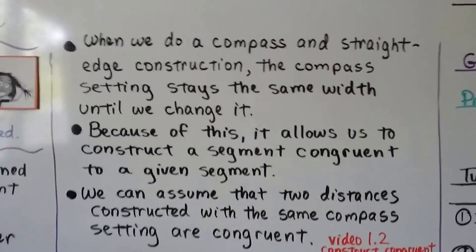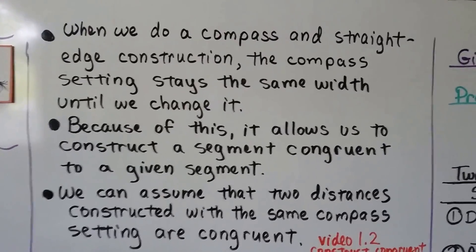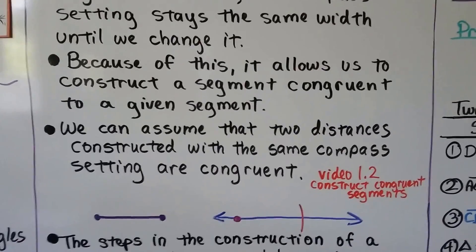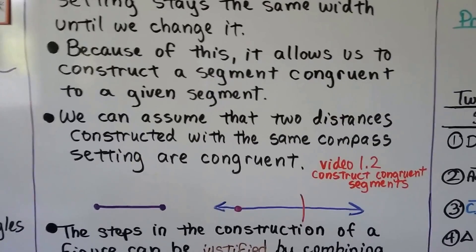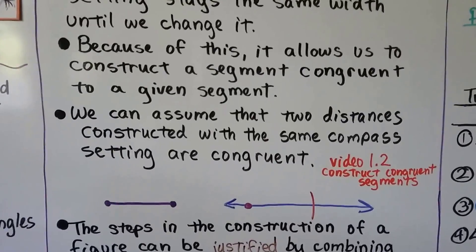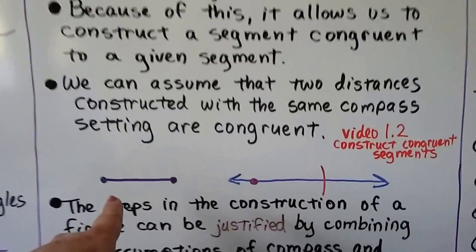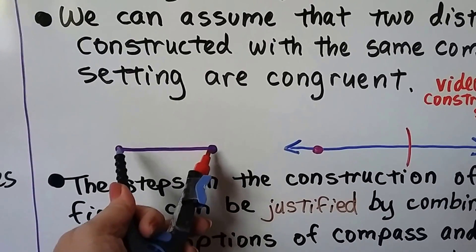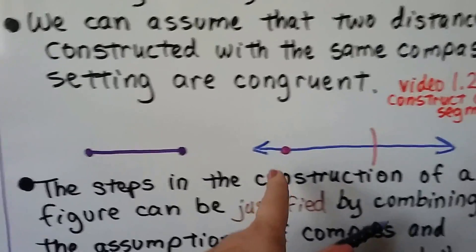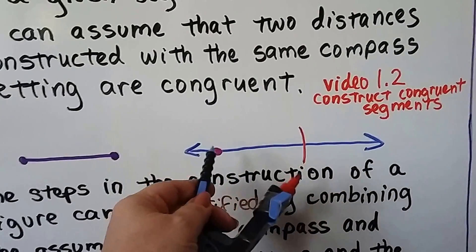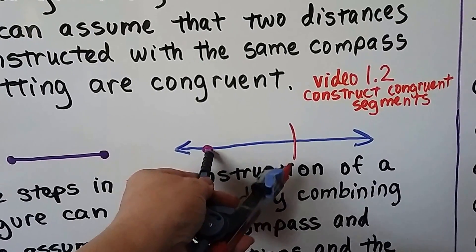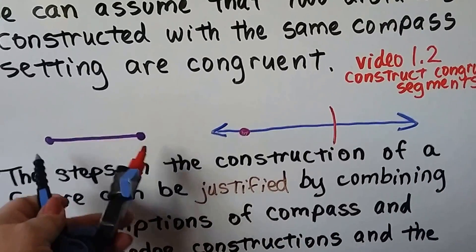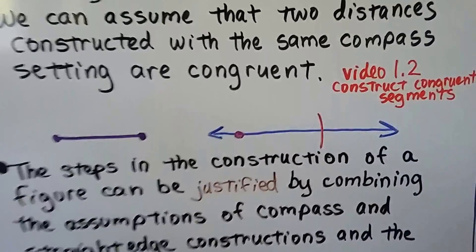In a compass and straight edge construction, the compass setting stays the same width until we change it. This allows us to construct a segment congruent to a given segment — two distances constructed with the same compass setting are congruent. Back in video 1.2 we learned how to construct congruent segments. We measure the distance between points A and B with the compass, draw a ray, place the compass point on it, make an arc, and that gives us the second point. This makes a congruent segment.